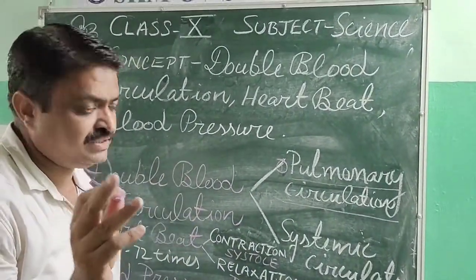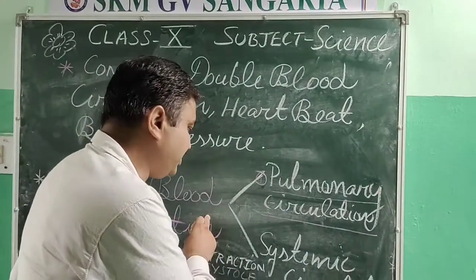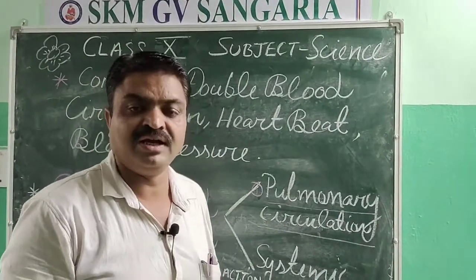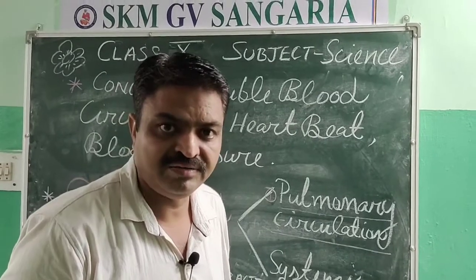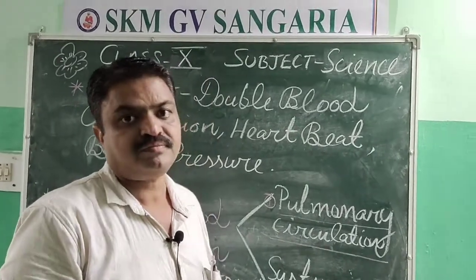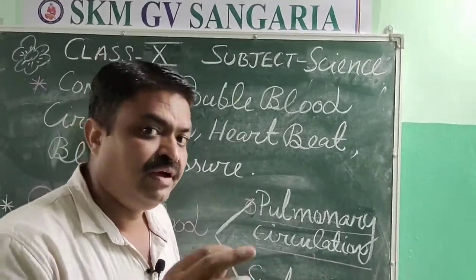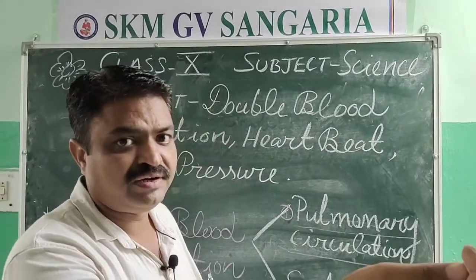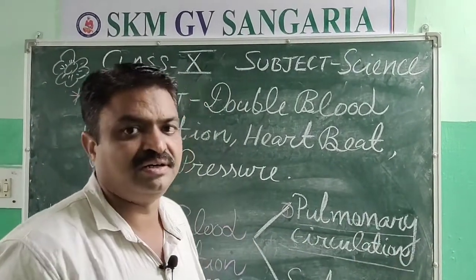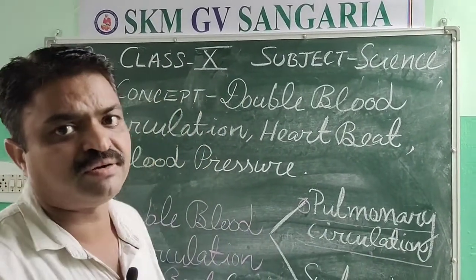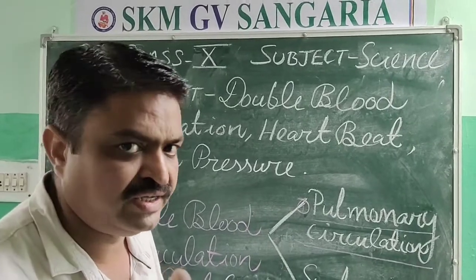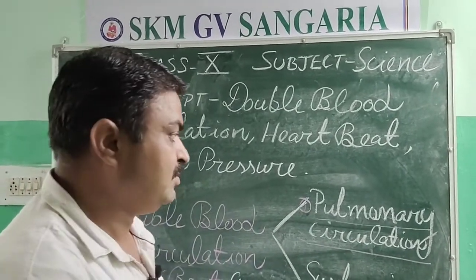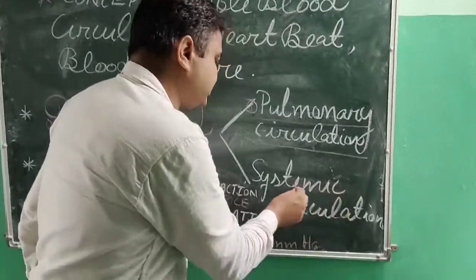The second circulation that takes place is when blood is passed to the different organs like the stomach, kidney, and intestine, and from those organs it comes back towards the heart. This circulation is known as systemic circulation.